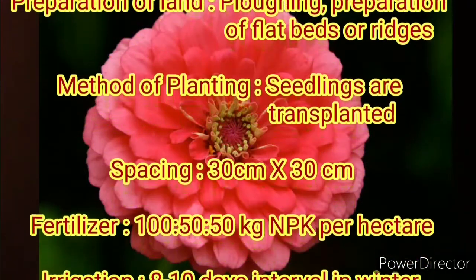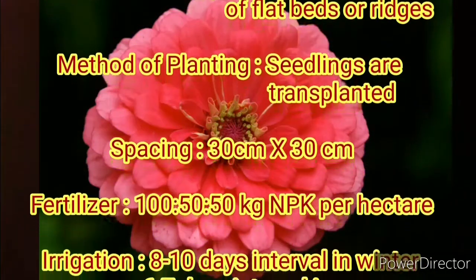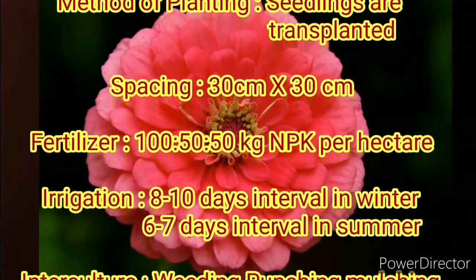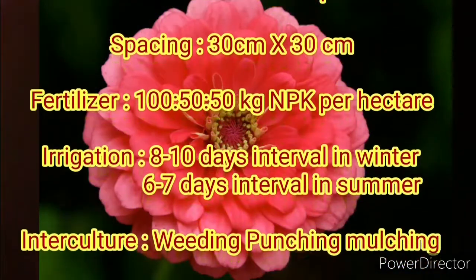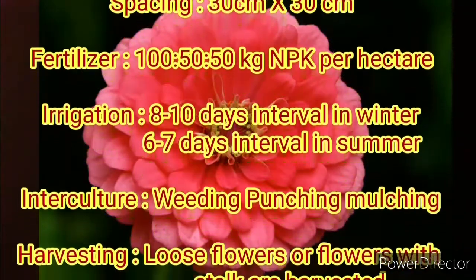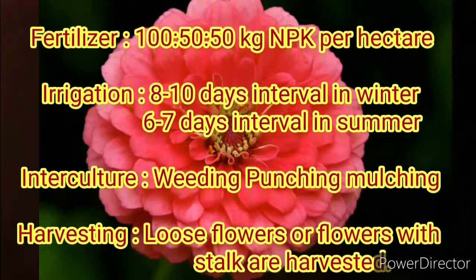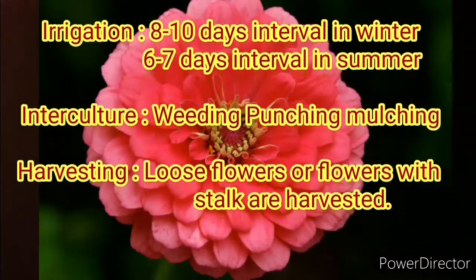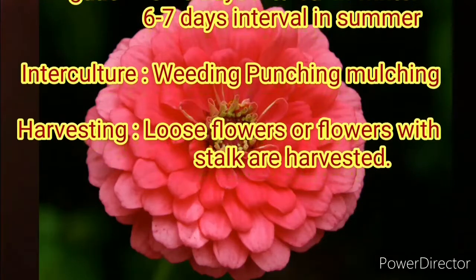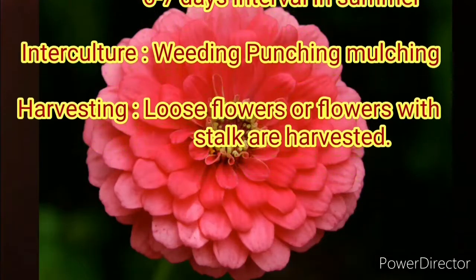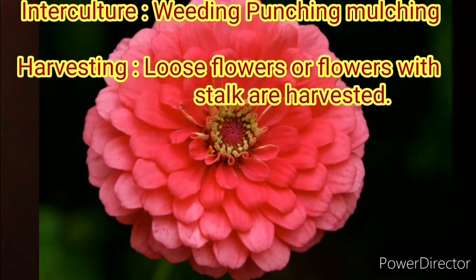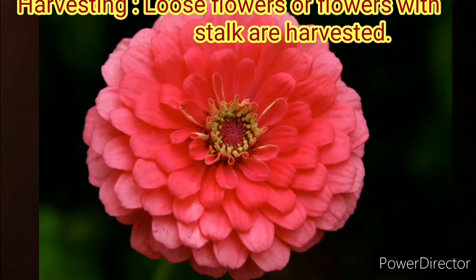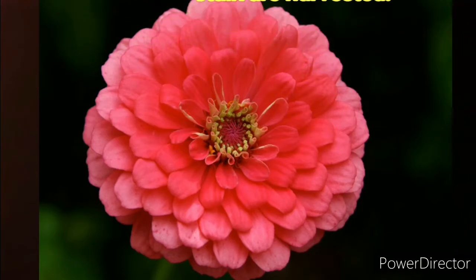Spacing should be 30cm x 30cm. Fertilizer dose is 100 x 50 x 50 kg NPK per hectare. Irrigation is done at 8 to 10 days interval in winter and 6 to 7 days interval in summer. Interculture can be done by weeding, pinching, and mulching. In case of harvesting, loose flowers or flowers with stalks are harvested.